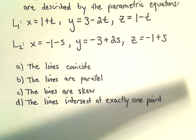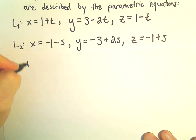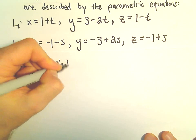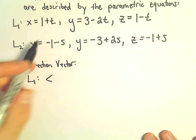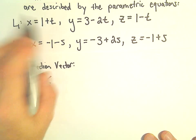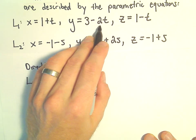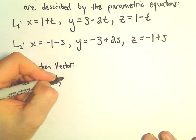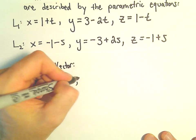So what I'm going to think about is the direction vectors for each line. For line one, the direction vector—basically what we do is we take the coefficients on the t's. So we've got 1 plus t, the coefficient on the t is a positive 1. We look at 3 minus 2t for the y component, the coefficient on the t is negative 2. And then for z, the coefficient is a negative 1.